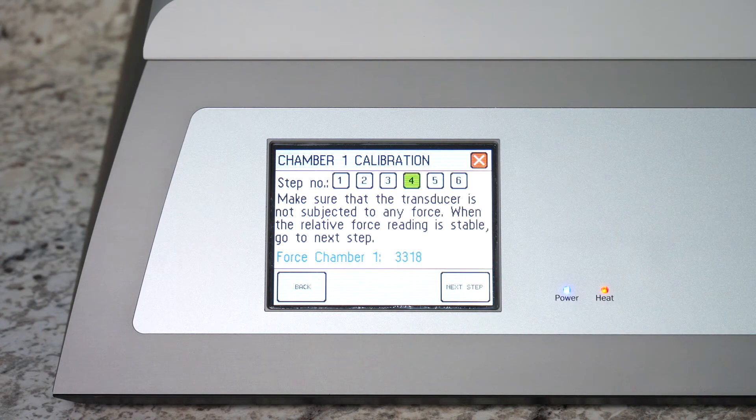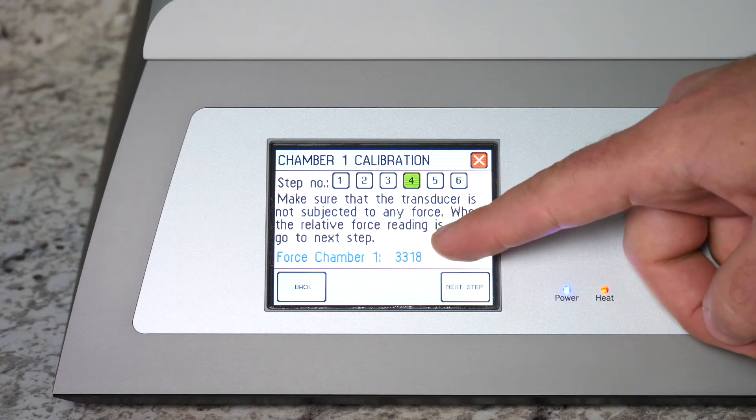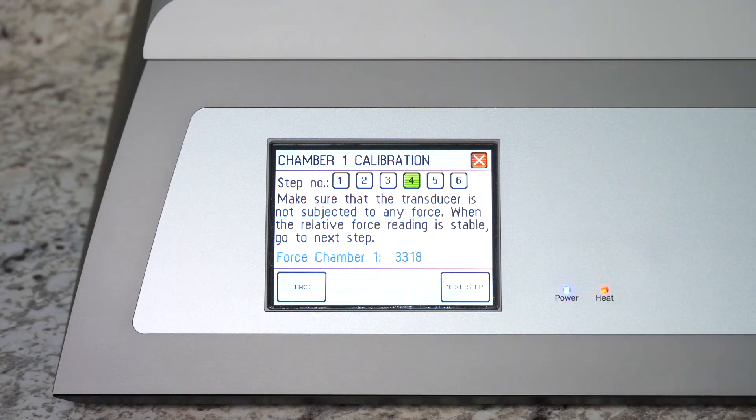Step four asks you to make sure that the transducer reading is stable. In this instance the reading is stable but if it's going back and forth between two numbers that's all right. You can give it a couple extra minutes or you can go on.